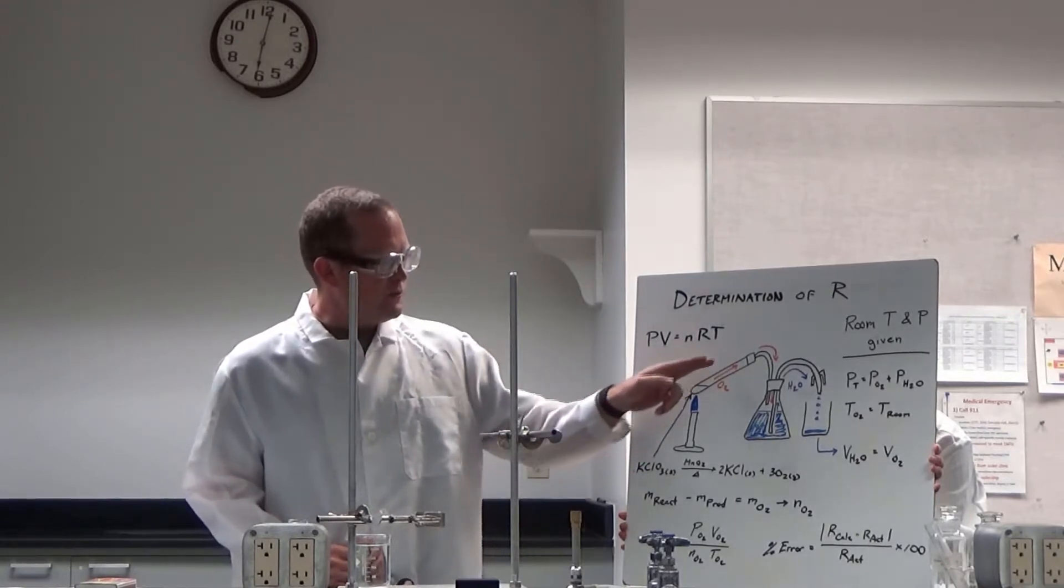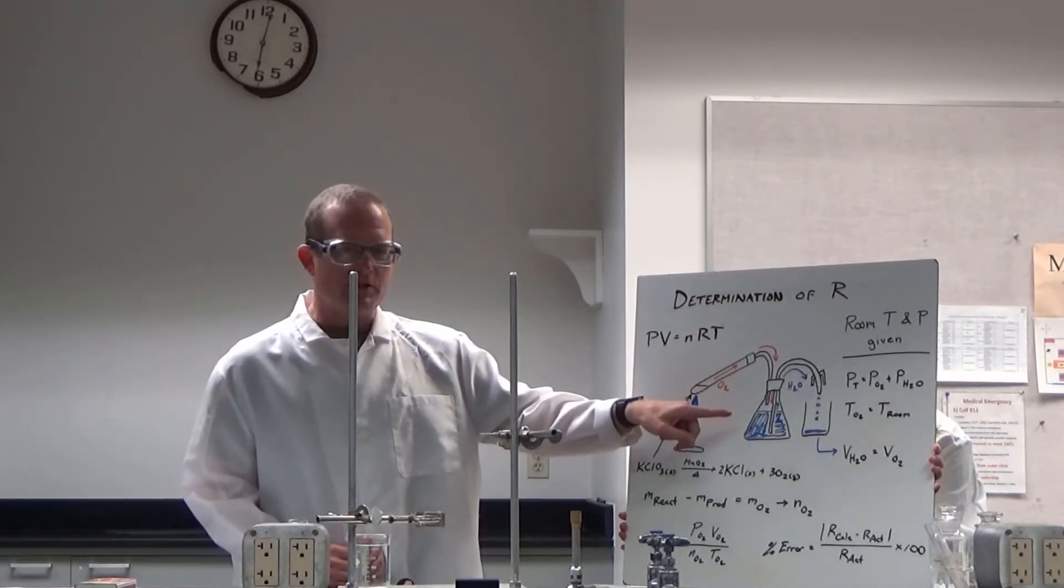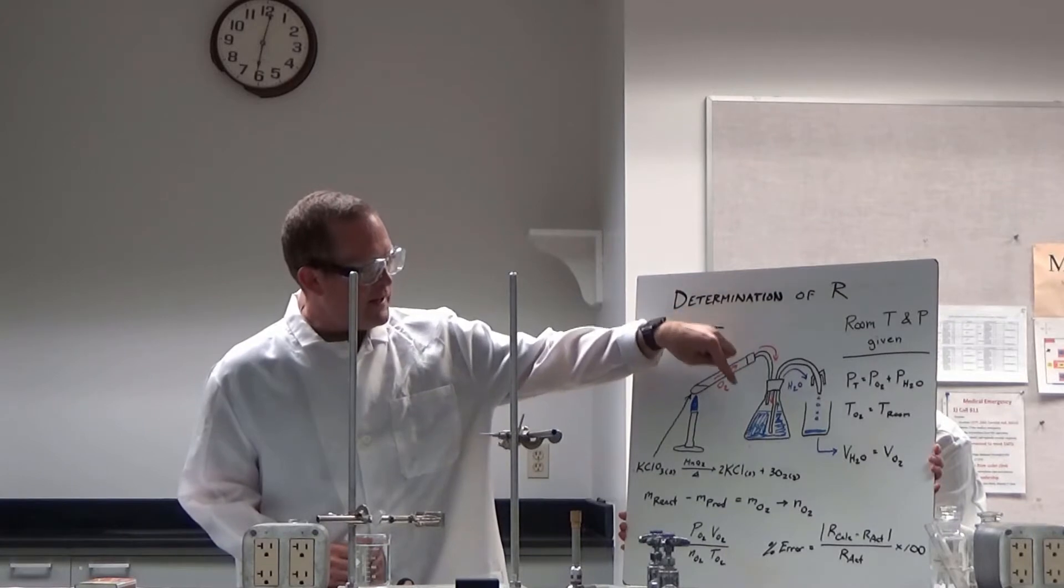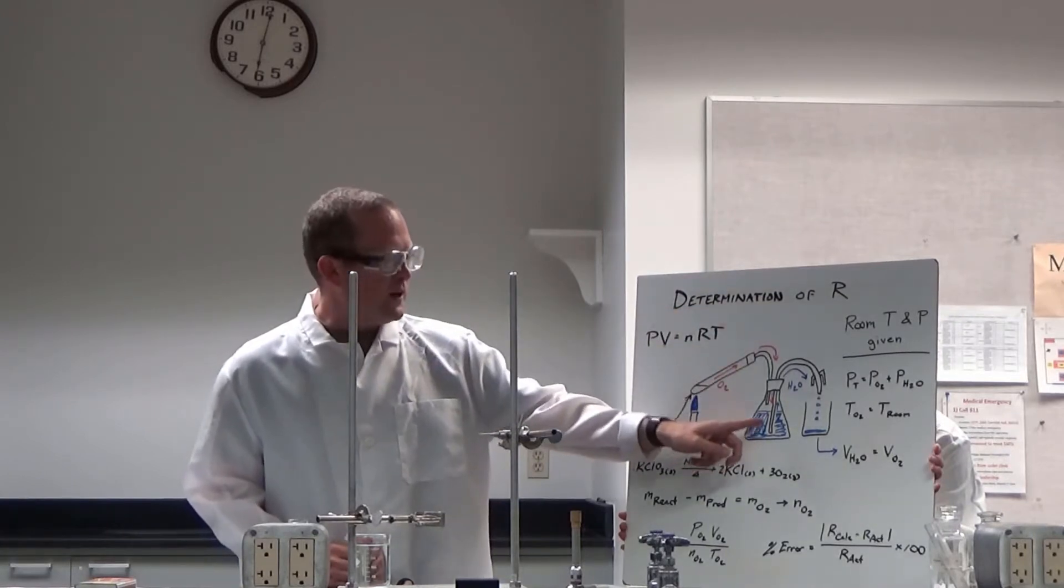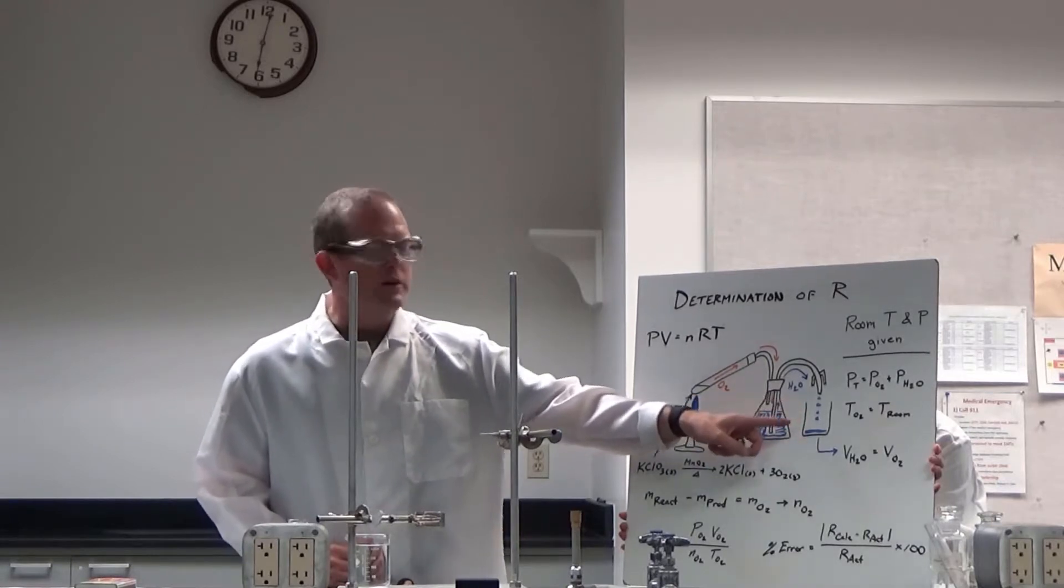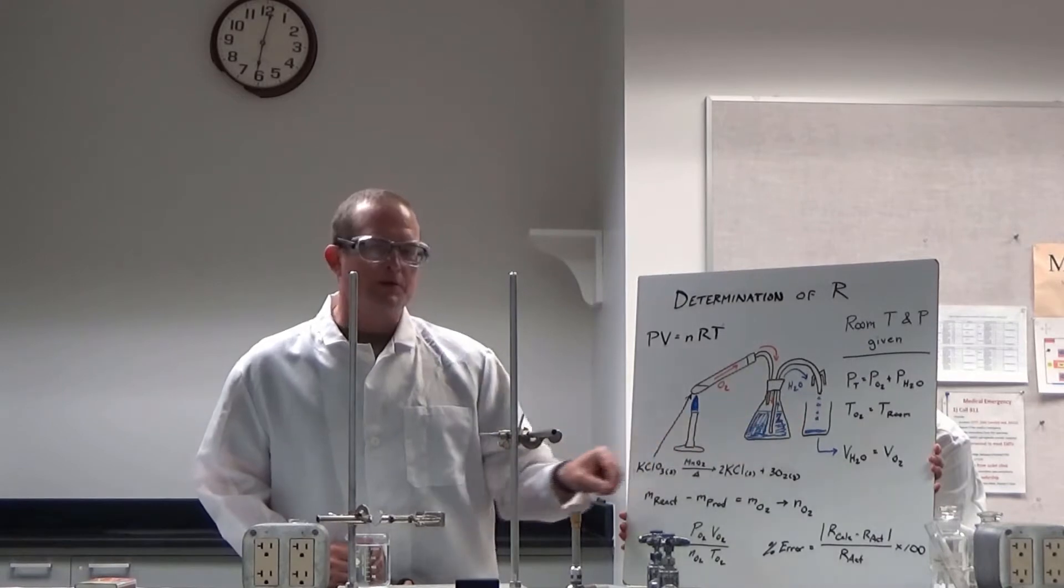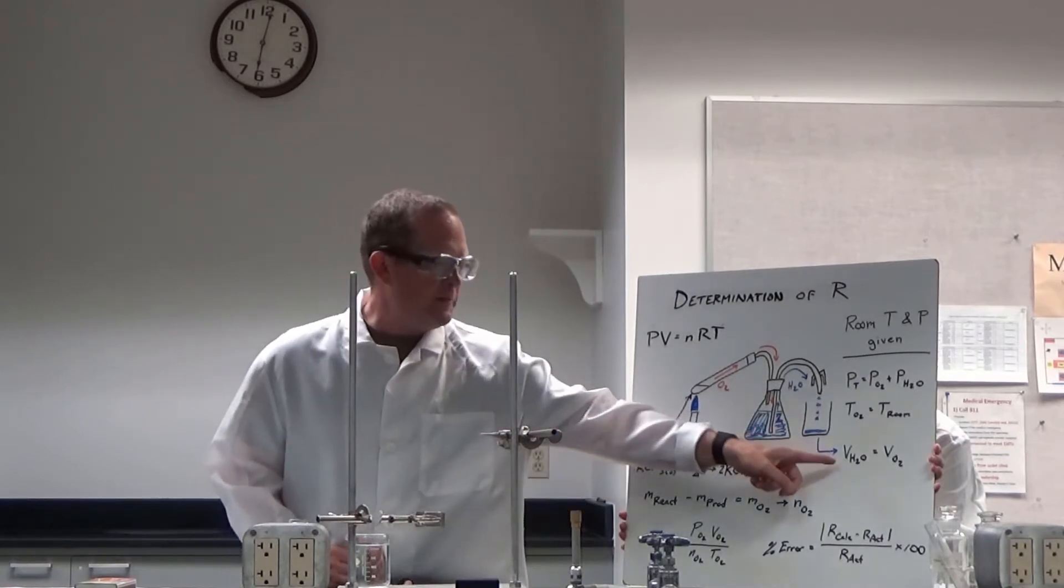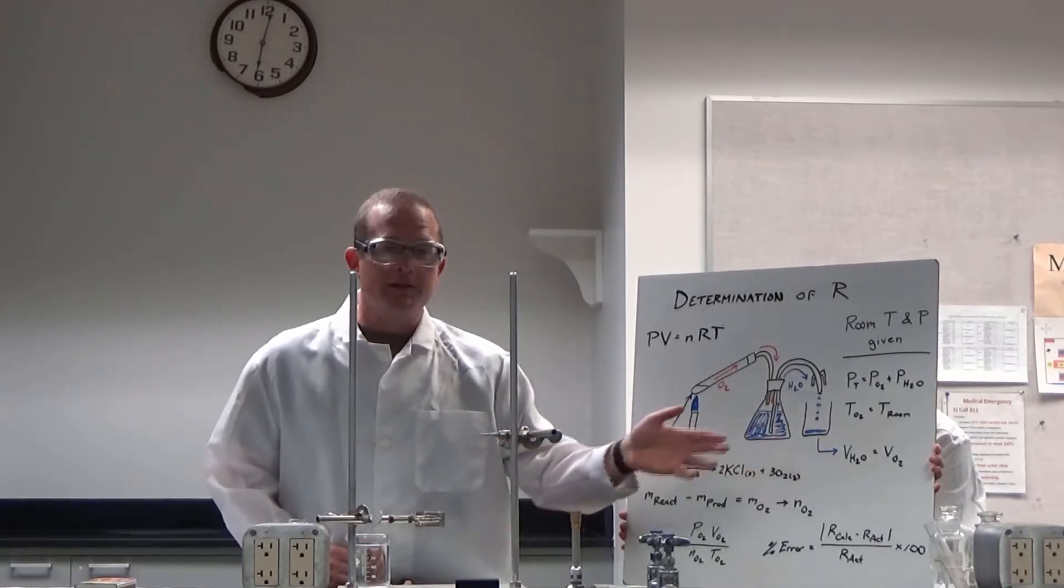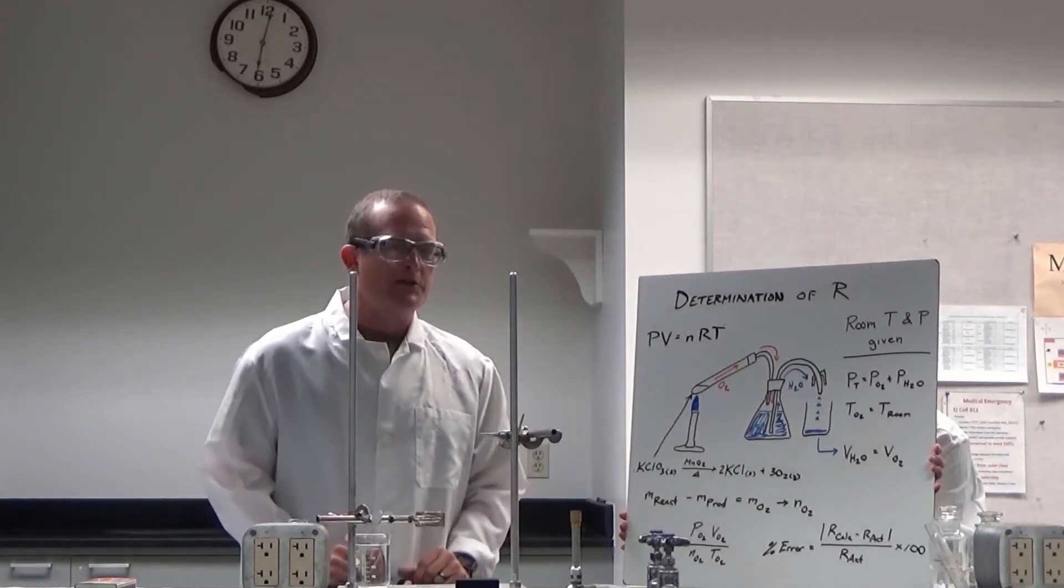The oxygen gas will flow out of the ignition tube into this Erlenmeyer flask, which is under a vacuum. Because it's under a vacuum, whatever gas is added here will force water up through this tube and into this beaker here. So knowing the mass of this beaker beforehand and the mass afterwards, we can determine the mass of the water and then through density calculate the volume of the water, and that's equal to the volume of the gas that's generated.